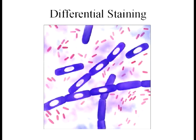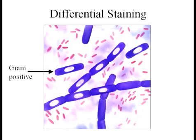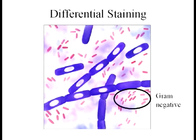This image nicely illustrates the differential staining accomplished via the gram staining technique. Some of the bacteria are stained pink or red, while the other bacteria are stained purple. In gram stain, the gram-positive bacteria are stained a purplish color, while the gram-negative bacteria are stained a pink or a red.